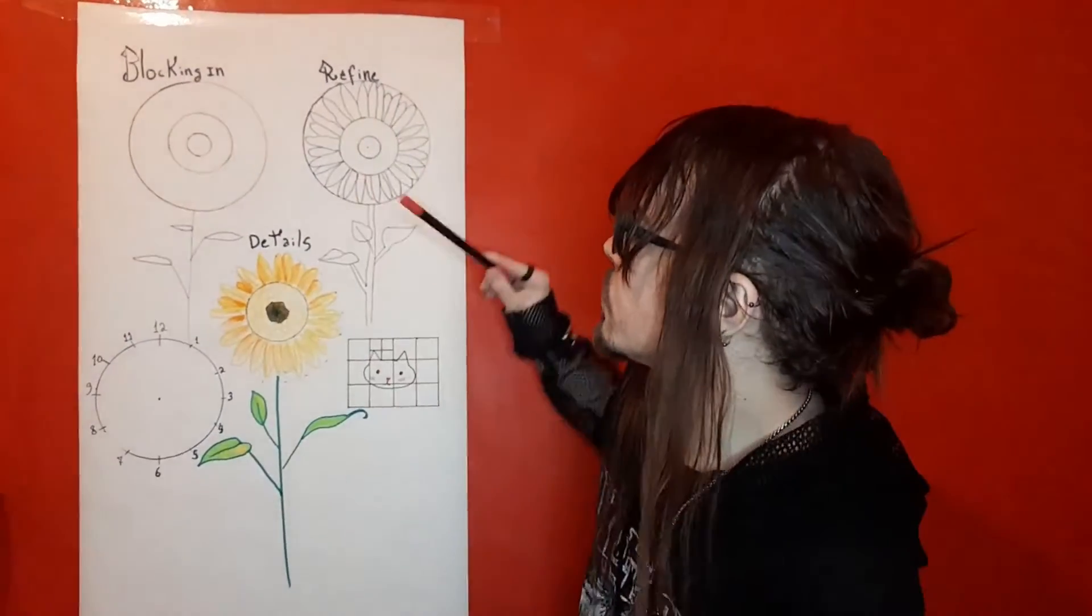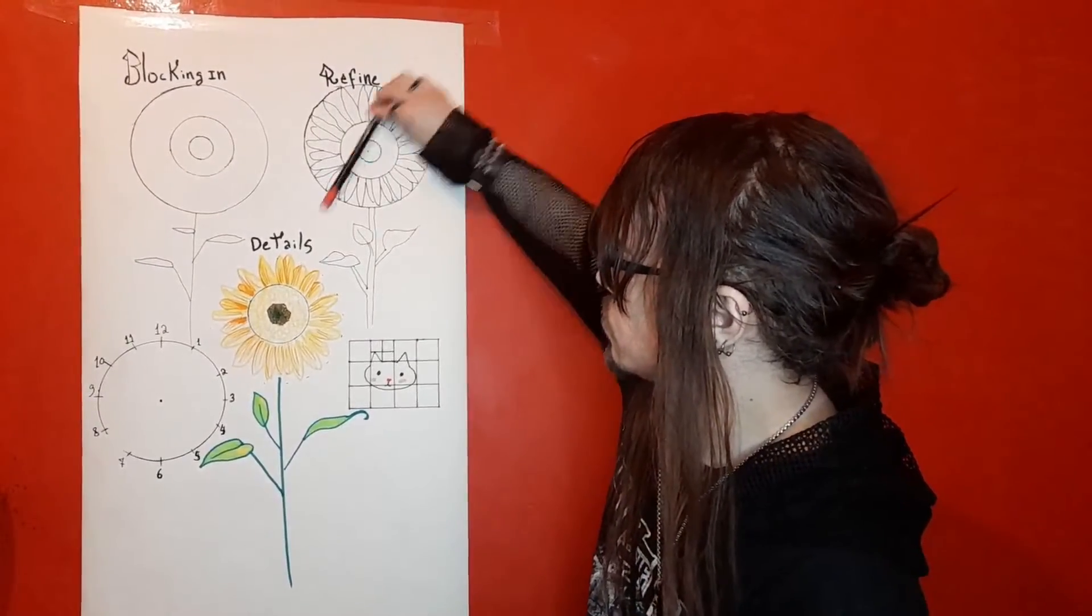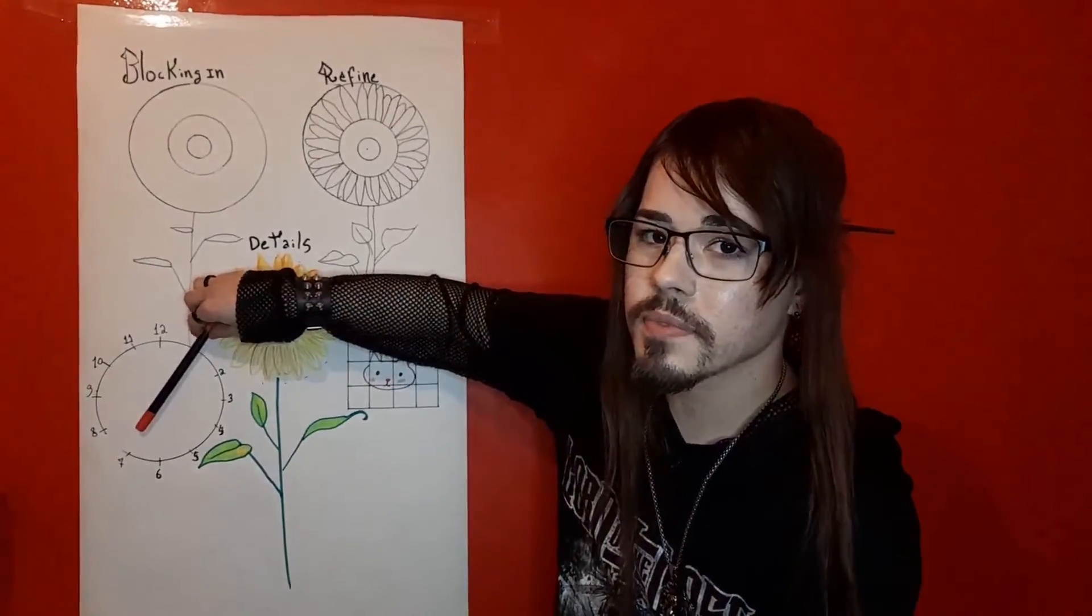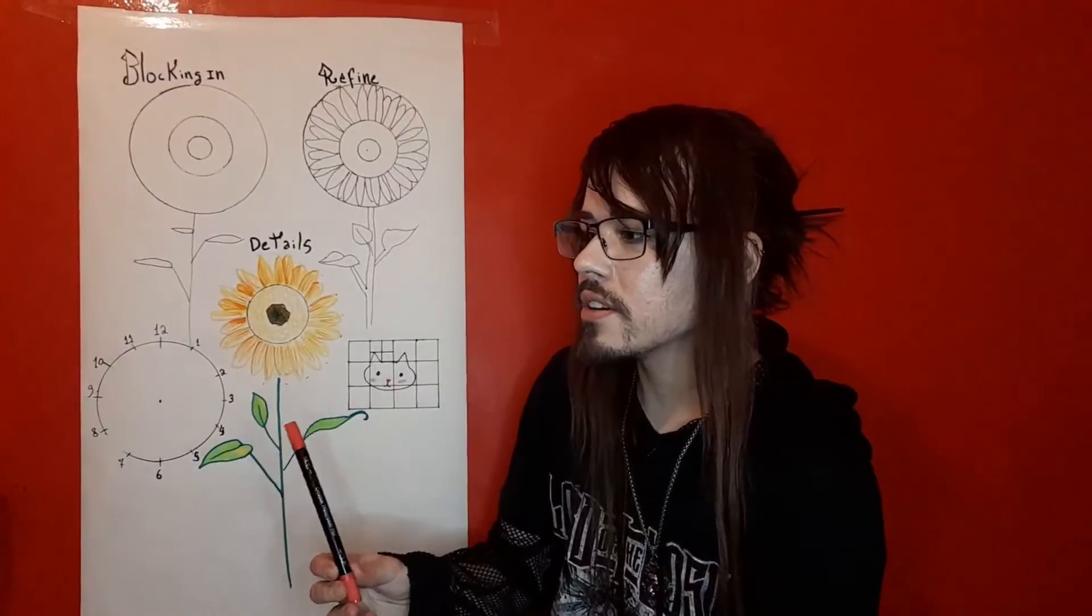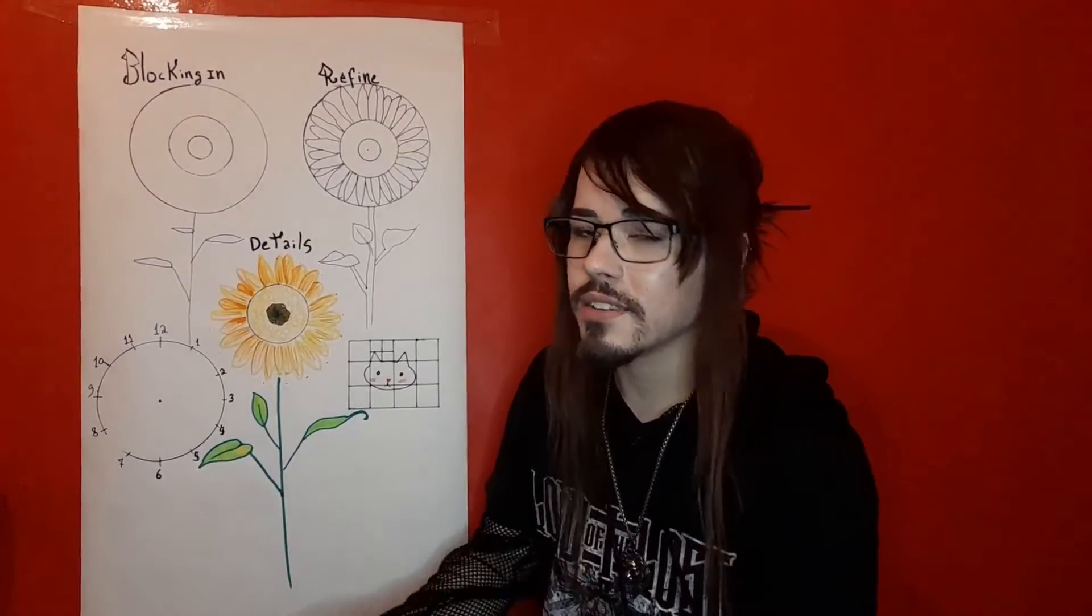You can use this clock for every single angle that you need to figure out. For example, you want to find this one. You just see that it's like this. So in a clock it will be pointing at 1. That way it will be very easy to figure out the angles of everything around you, and easy to draw them.